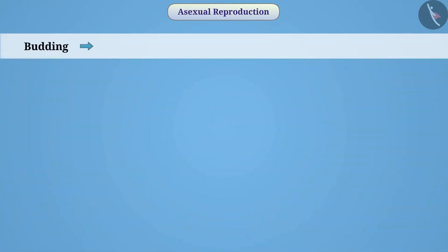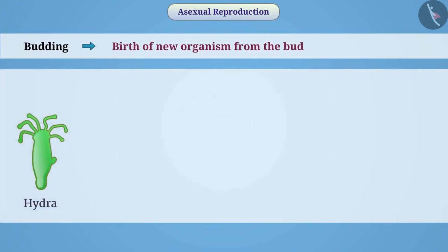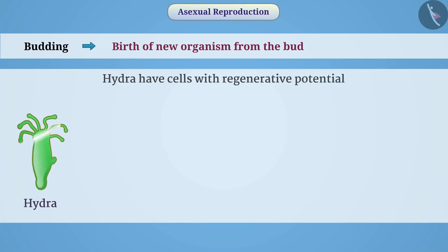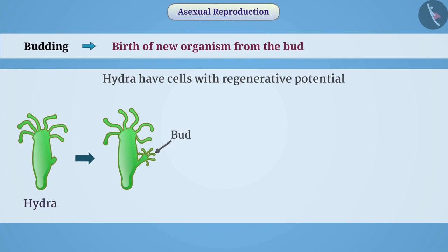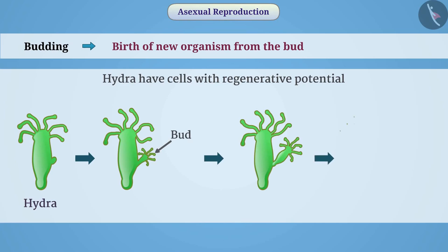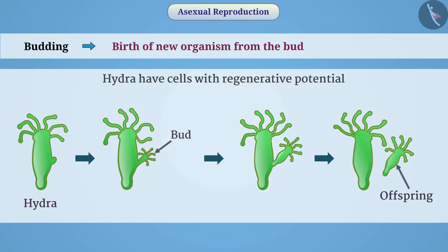Budding: Some organisms such as hydra have cells with regenerative potential. When the hydra is fully grown, the regenerative cells divide by creating a bulge — a bud on the body wall. This bud develops into a small hydra. Upon sufficient growth, these organisms separate from the parent hydra and become independent organisms.